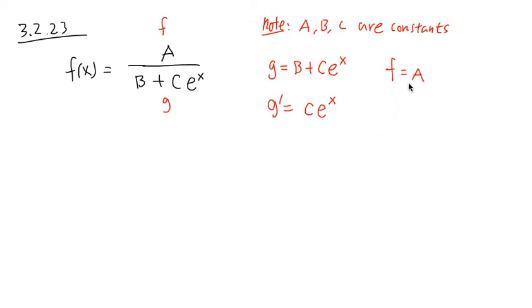Derivative of c e to the x is just c e to the x. And for f, f is equal to a, derivative of constant is just 0. And this is all we need. Now we are going to proceed.